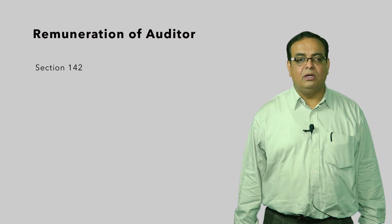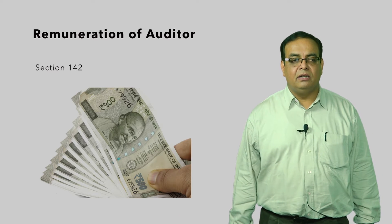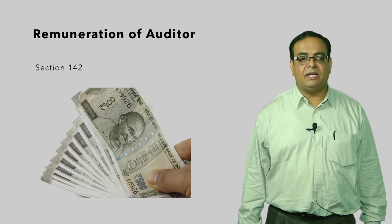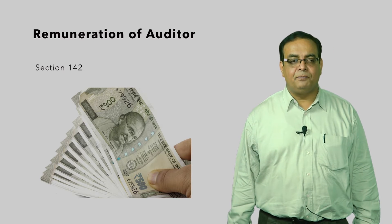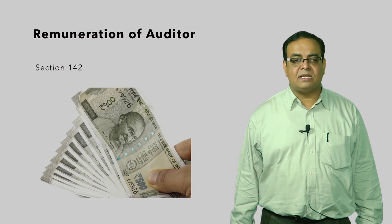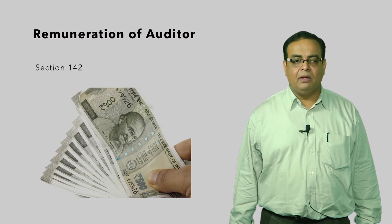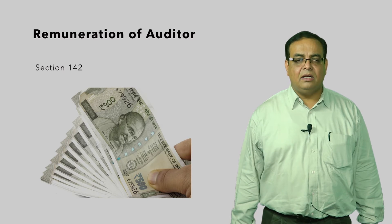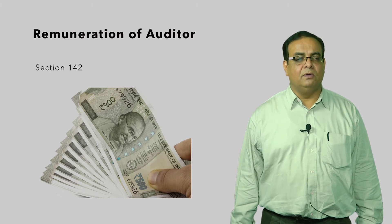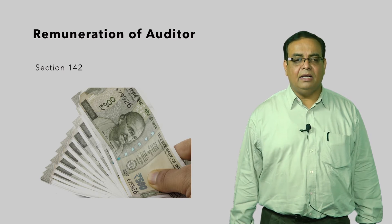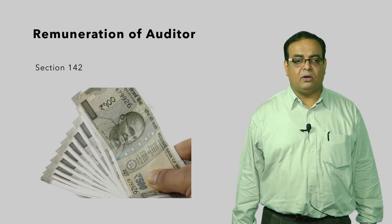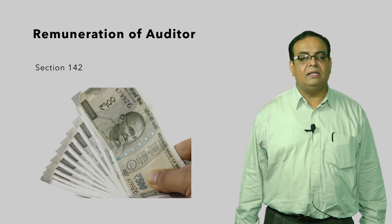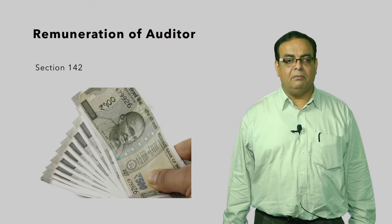Section 142 relates to remuneration of the auditor. It explains that the remuneration of the auditor shall be fixed in a general meeting or in such manner as may be determined therein, provided that the board may fix remuneration of the first auditor appointed by it. Remuneration shall in addition to the fee payable include the expenses incurred by the auditor in connection with the audit of the company and any facility extended to him.